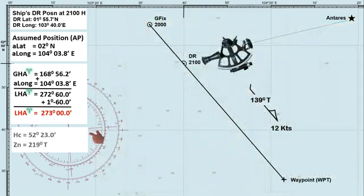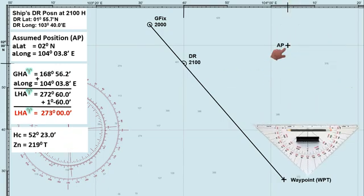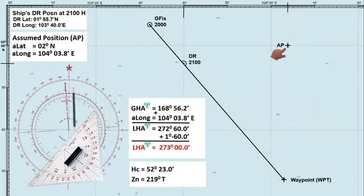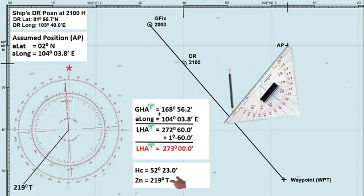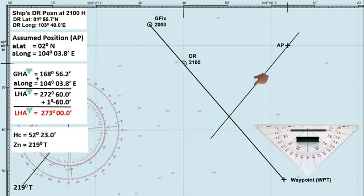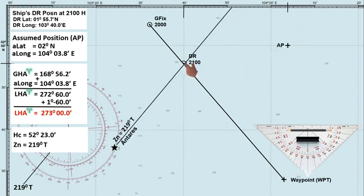Let's go back to the chart and plot our assumed position. Our assumed latitude is 2 degrees north, and the assumed longitude is 104 degrees, 3.8 minutes east. Here is our assumed position. Lay down the bearing of the star Antares, which is 219 degrees true, at the assumed position. So the bearing of star Antares is in this direction. But if you are using a different method in finding the true azimuth of any celestial bodies, most especially if that method is using DR position, then the bearing of the body should be laid down in the DR position. Assumed position has no use when using different methods.